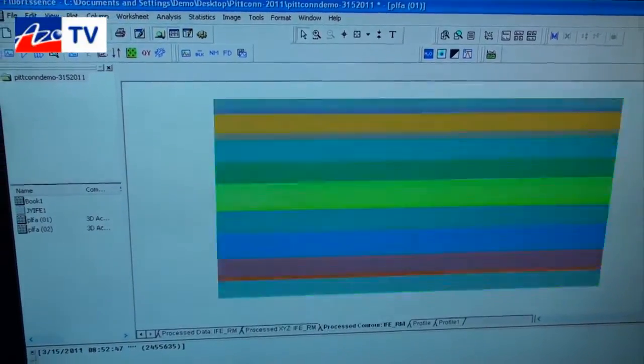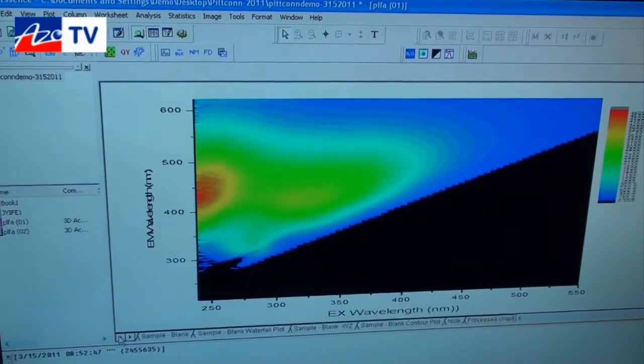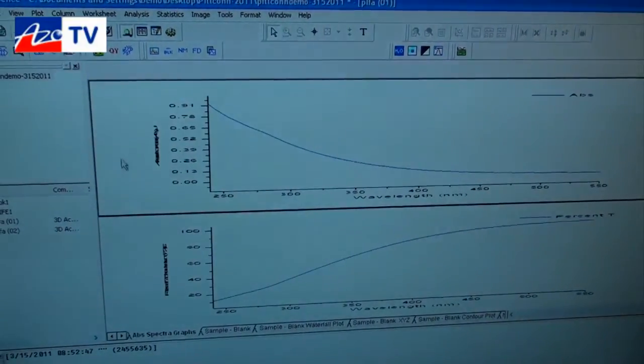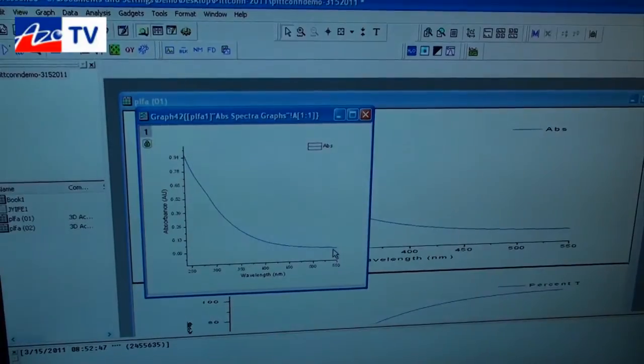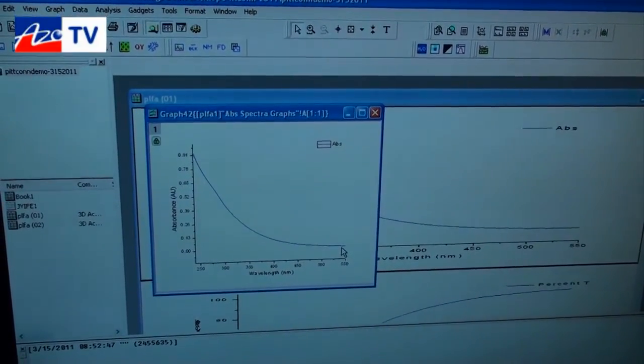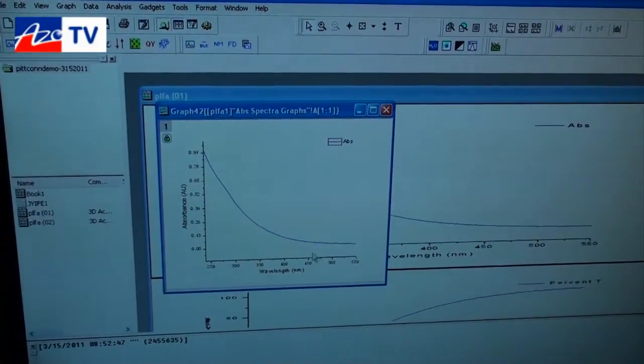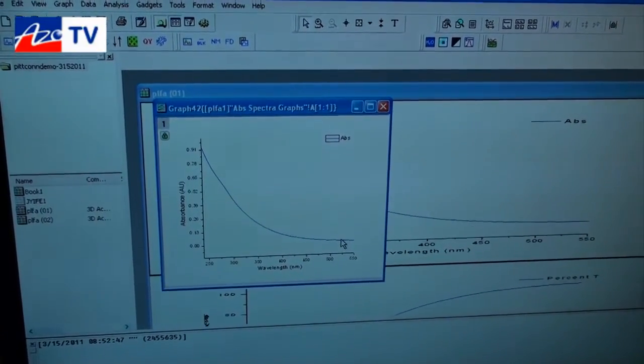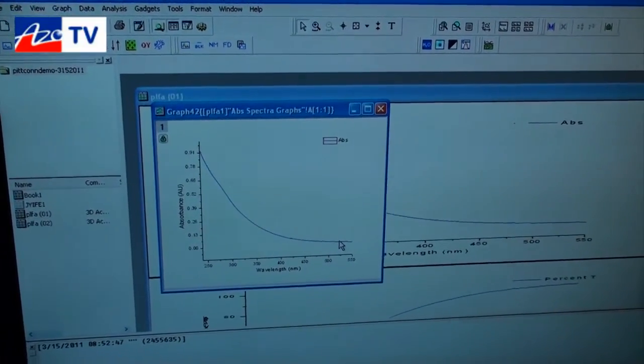At the same time we also acquire an absorption spectrum, and the absorption spectrum is important for two reasons. It's important because it's measured simultaneously with the fluorescence so you have a kinetic match, and the data from the same instrument is available for the processing.